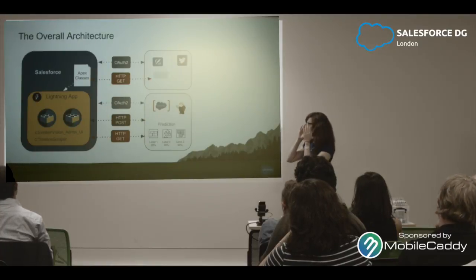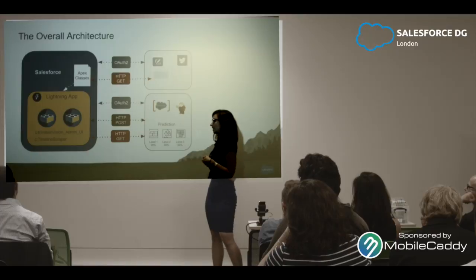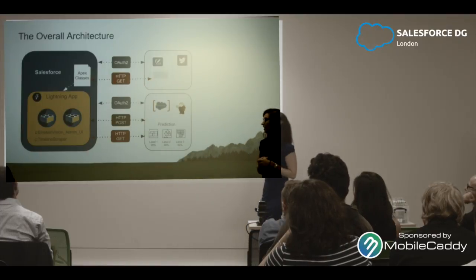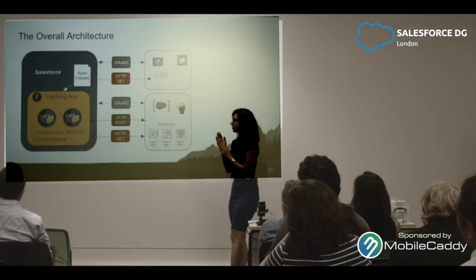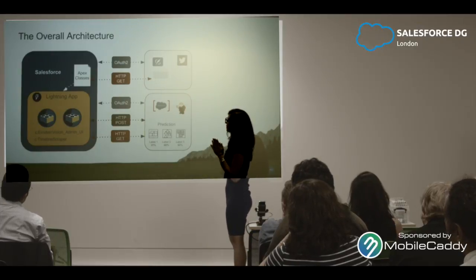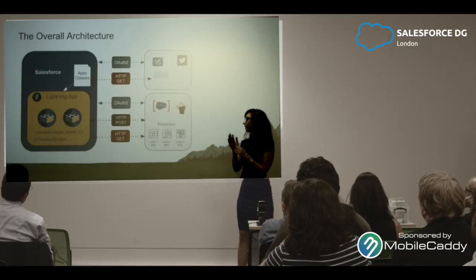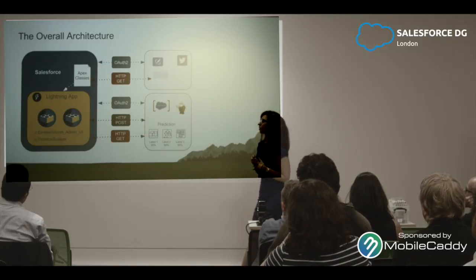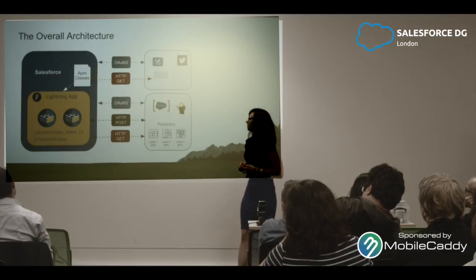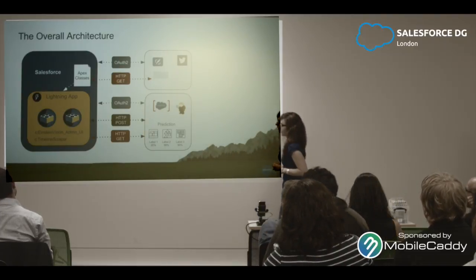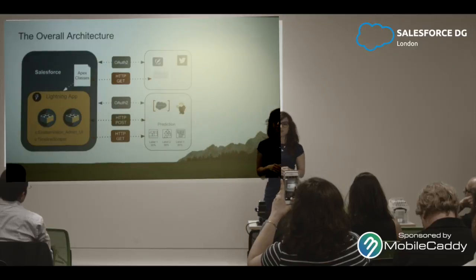This is my overall architecture. I have two main Lightning applications. This is the Einstein Vision Admin UI — you can get the code template from the module. I created a component, Timelines Scraper. From Twitter, I built some Apex to get the timeline JSON, and from there I get the media URLs that I'm using. I'll try to show you how you can use the Einstein Vision API to make POST and GET requests to get the labels of images being classified.